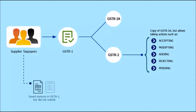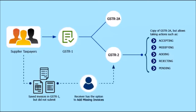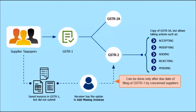If a supplier has saved invoices but has not submitted GSTR1 yet, the receiver can add those auto-populated saved invoices using the add missing invoice details option and file GSTR2. Such actions can be taken only after the due date of filing of GSTR1 by the concerned suppliers.